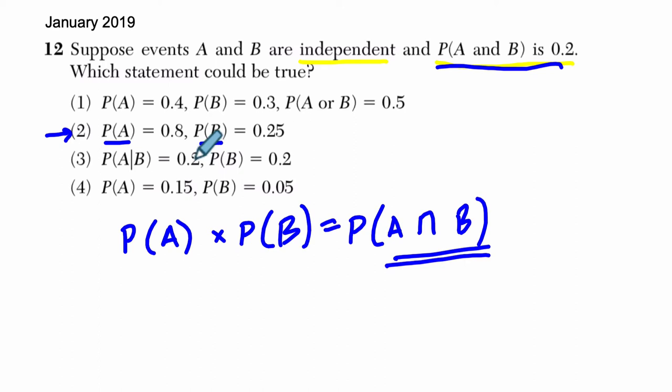If A is 0.8 and B is 0.25, and we multiply these two things and get 0.2, then it's the answer because that could be true. They're independent, so their probabilities would equal the intersection of A and B. Is that true? Well, 0.8—that's 8/10 times 1/4.